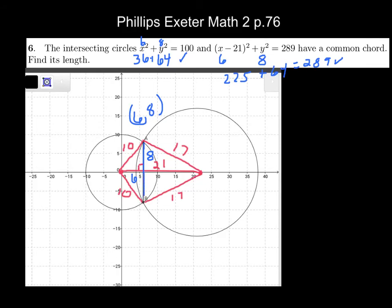So the height there is 8, which means the whole chord length is 16. Now I could just leave it at that — we guessed and checked. But when a test comes, you won't want to guess and check and hope you get it right. So let me give you another idea.